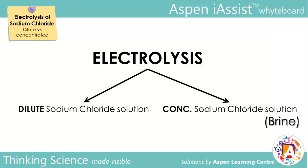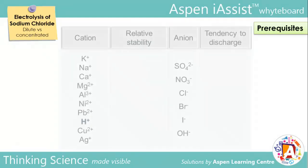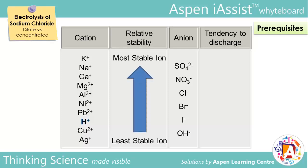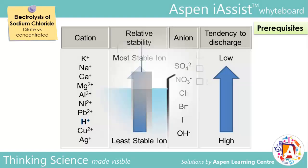Before we begin, you need to have some prerequisite knowledge. Firstly, you need to know the relative stabilities of both cations and anions. The greater the stability of the ion, the lesser the tendency for discharge. Note the relationship between the reactivity of metals and the relative stabilities of their ions: the more reactive the metal, the greater the relative stability of the ion.